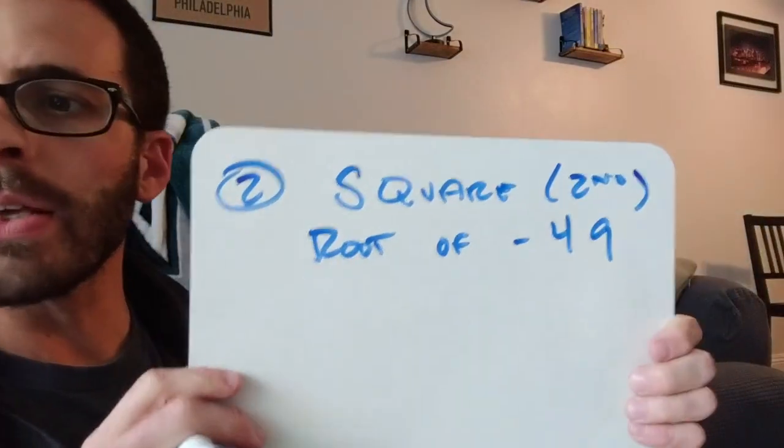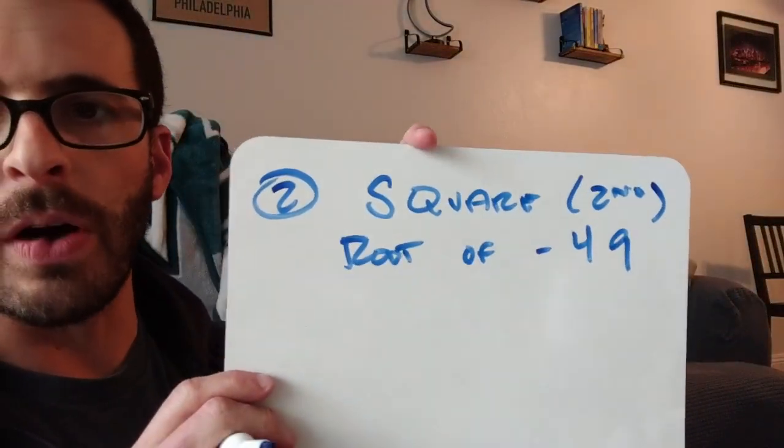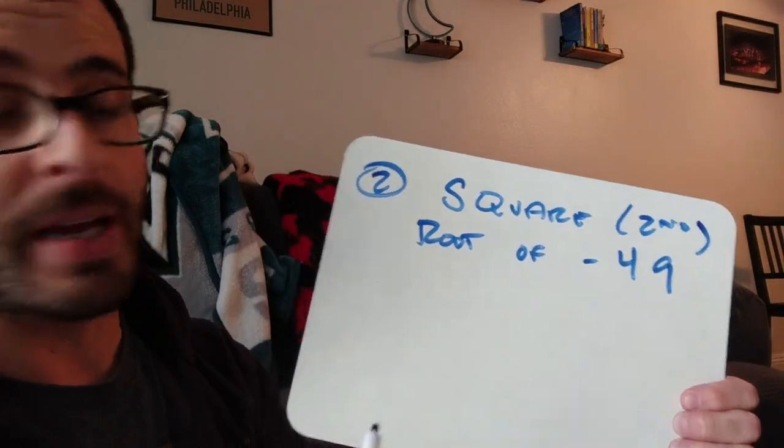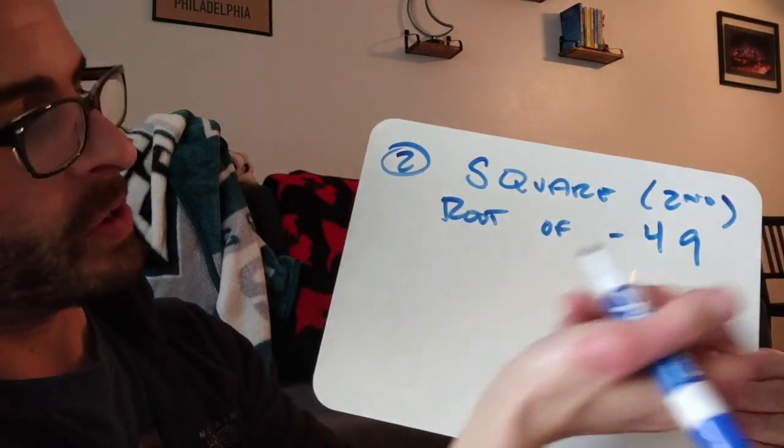Likewise, for number 2, it's asking us to find the second, which of course we call the square root of negative 49. Now, we want to find the real answers to this, but I want you to get used to writing it.